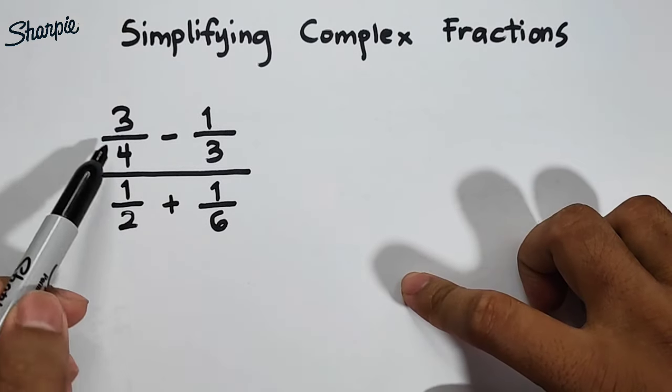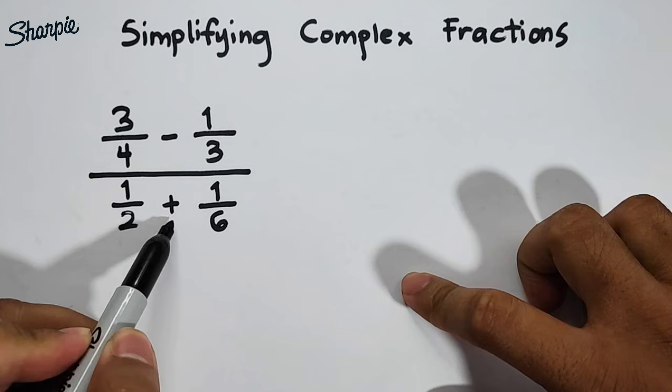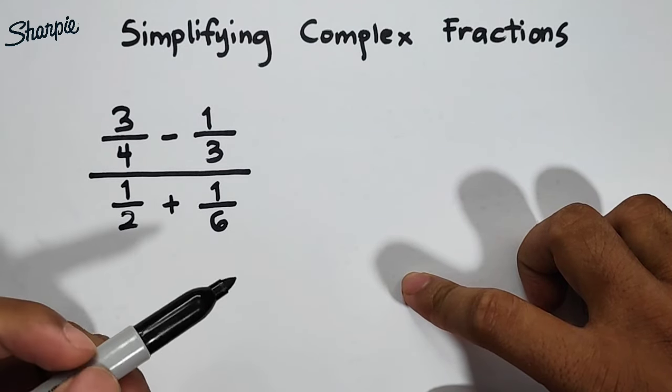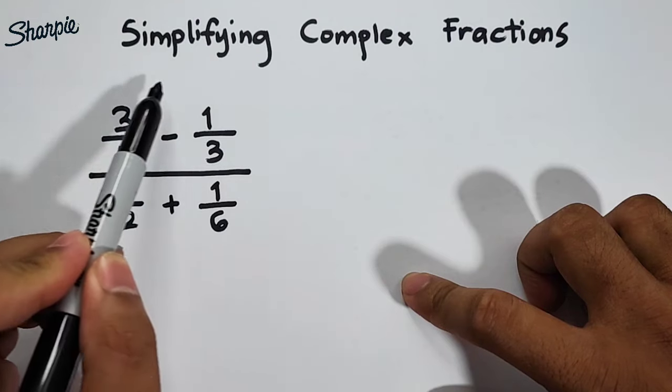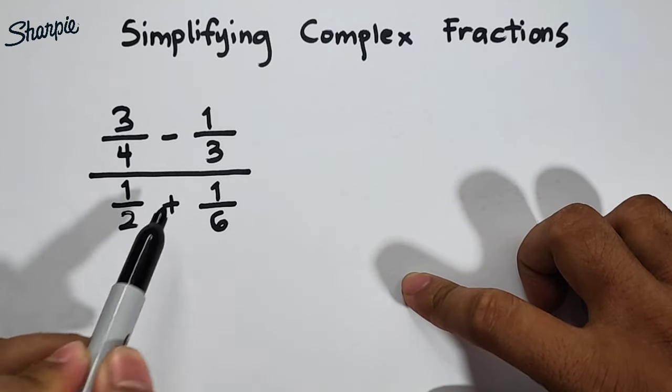As you can see, we have here 3 over 4 minus 1 over 3, over 1 half plus 1 over 6. In this case, this one is called a complex fraction because our numerator is composed of fractions, the same with your denominator.